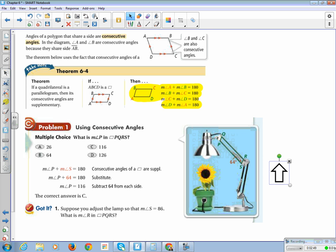When we see this in our problems, there's this quadrilateral right here. What is angle P in quadrilateral PQRS if angle S is 64? We know angle P plus angle S equals 180 because consecutive angles are supplementary. So, angle P plus 64 is 180. That leaves us with angle P equaling 116. That is answer C right here.